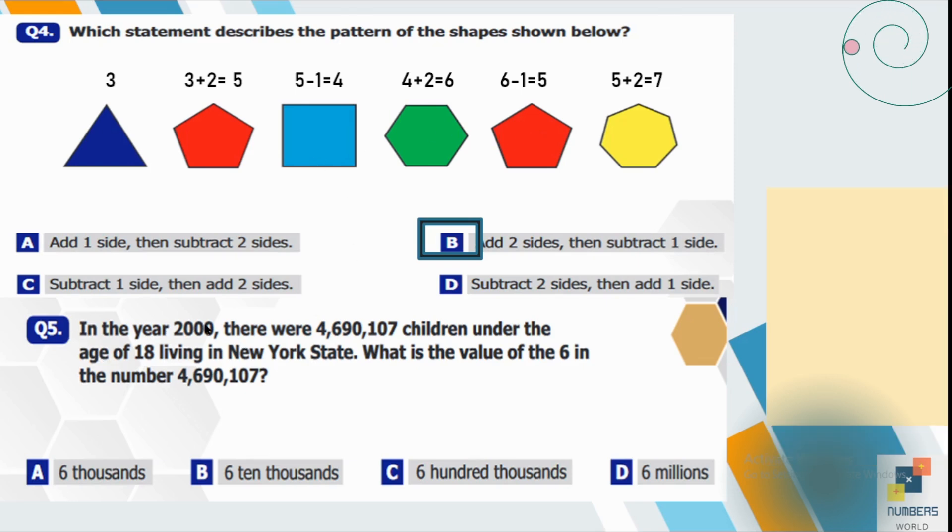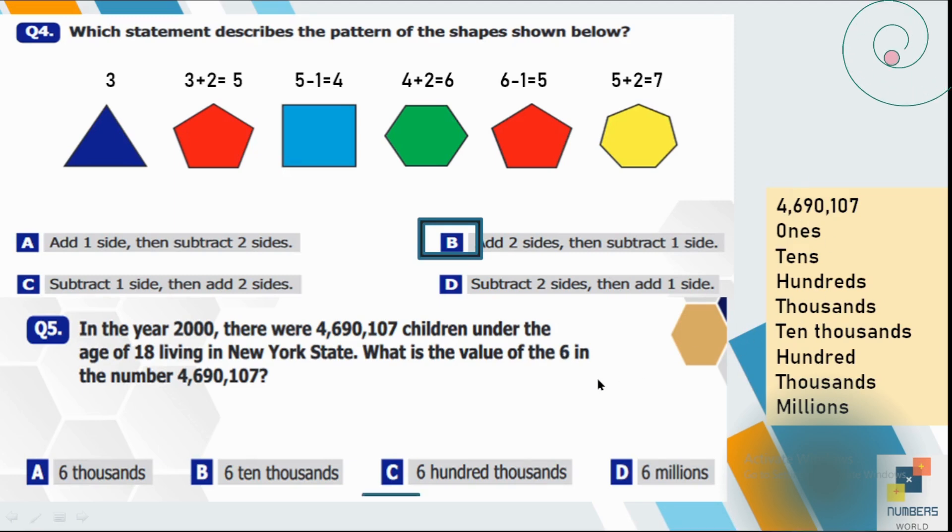Question number 5. In the year 2000 there were 4,690,107 children under the age of 18 living in New York state. What is the value of the six in the number 4,690,107? So let's just reinforce the place value first. So seven is at one's place. Here zero is at tens. One is at hundreds. Then this zero is at thousands. Nine is at ten thousands. Six is at hundred thousand and four is at millions place. So according to the question they have asked us about the six, the place value of six. So here six is at hundred thousand place. So it is six hundred thousand.